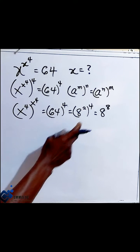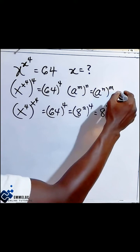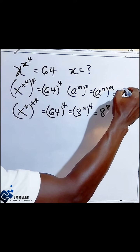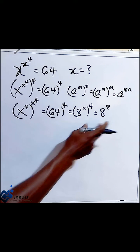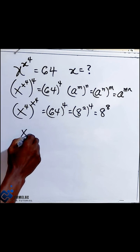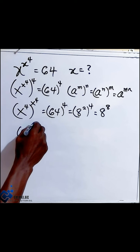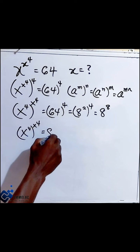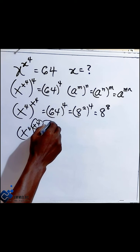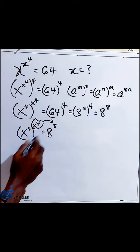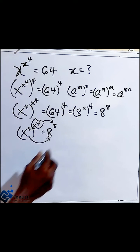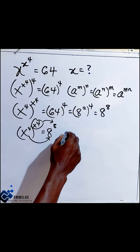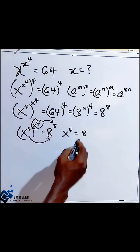Now in this case, according to the law of indices, this also can be expressed as a raised to the power of m, n, which we've applied here. So with this effect, we can now say x raised to the power of 4, r raised to the power of x raised to the power of 4, also equals 8 raised to the power of 8. We can equate this to that and this to that.